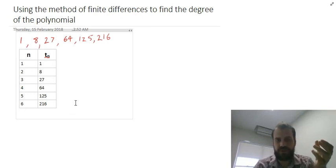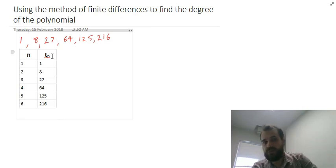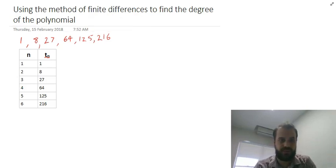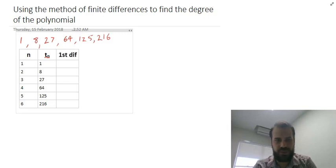...the third term is 27, and so on. Now the next thing you want to do is add another column to this table. And this column is going to be called the first difference. So what you do is take this number and subtract it from this number and get 7. Take this number, subtract it from this number and get 19, and so on and so forth.